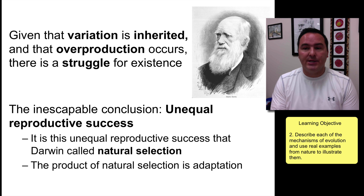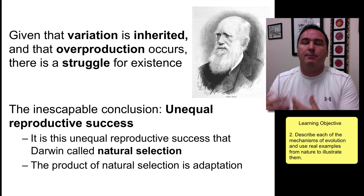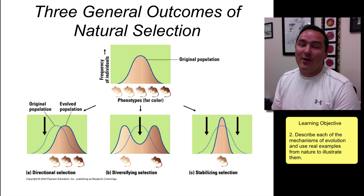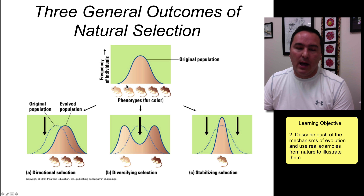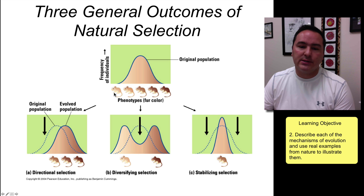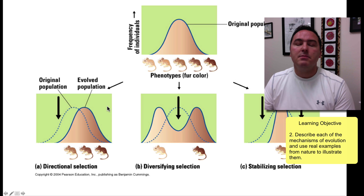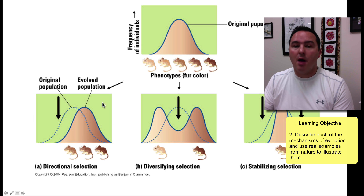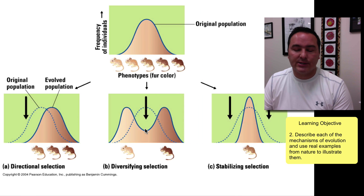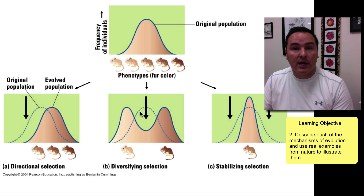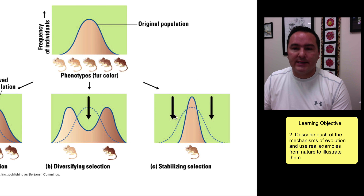The product of natural selection is adaptation — over generations, a population becomes more and more adapted to a particular environment. There are three general outcomes of natural selection. Directional selection is where darker-colored individuals are selected for, causing a shift over time. Diversifying selection is where both extremes — very light and very dark — are selected for, potentially leading to two separate species. Finally, stabilizing selection is where the extremes are selected against and the middle ground is selected for.